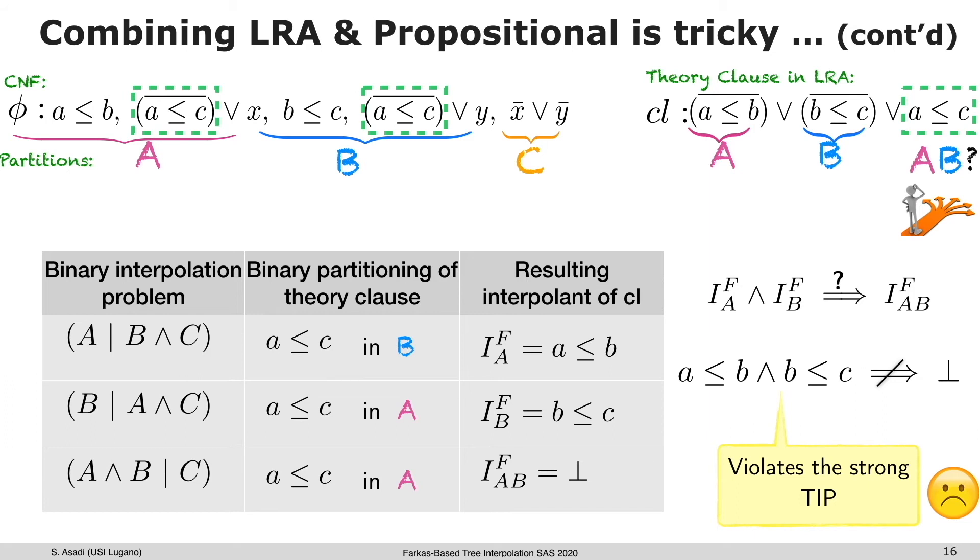Clearly, using these interpolants would violate the strong TIP. What happened here is the strong TIP was not guaranteed when we kept changing the labels of the atom that was shared between different binary interpolation problems.